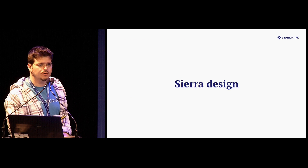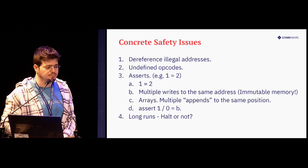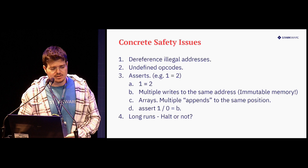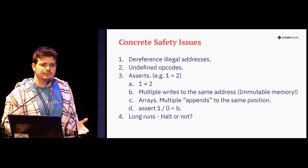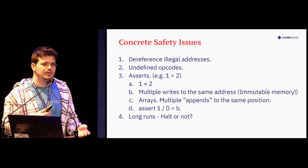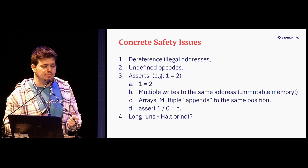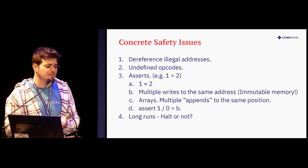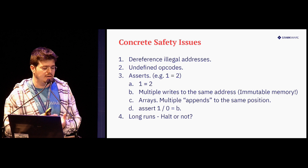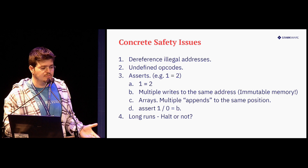So how do we design this intermediate representation that cannot fail? First, let's have a brief overview of what can actually fail in Cairo 0 — what can be illegal and cause something to be unprovable. First, we have dereferencing illegal addresses, which is bad. We have undefined opcodes. We have asserts that are wrong, like assert 1 equals 2.